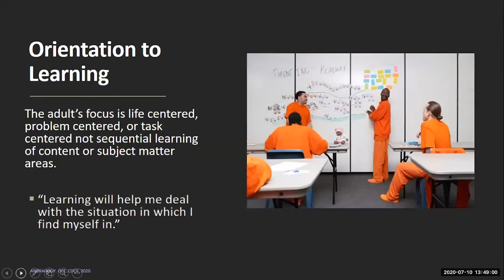Our next core principle is orientation to learning. Adults appreciate learning when it's tied to their own personal or professional goal — if I know that learning is tied to me somehow, I appreciate that. Most adults appreciate a well-organized learning experience that's going to help them get to that goal. As teachers, if we can identify the learning objectives, follow a clear agenda, and show students how the activities are helping them achieve their goals, we're going to get a lot more buy-in. Adults are very comfortable with routine — this is what we do, this is what it looks like. There's comfort and a feeling of safety in that. It takes some of that fear out and gives them the skill to help them deal with the situation they're in right now.